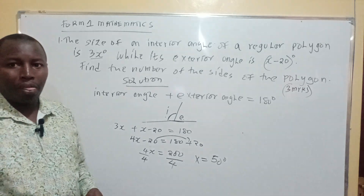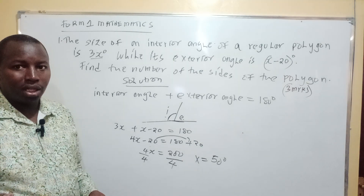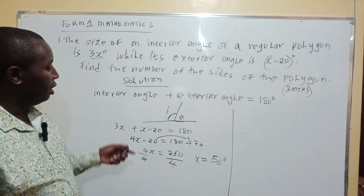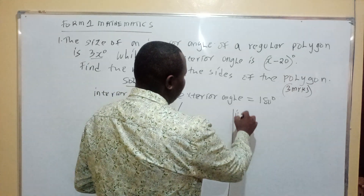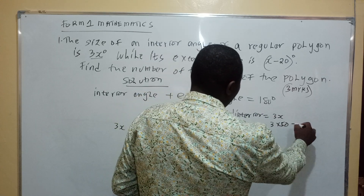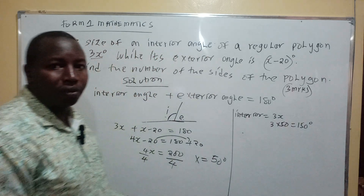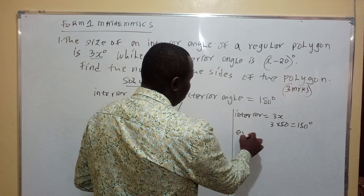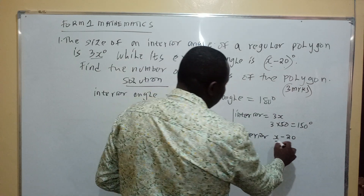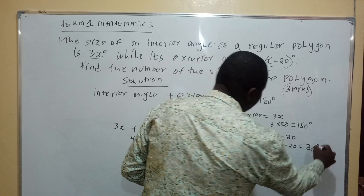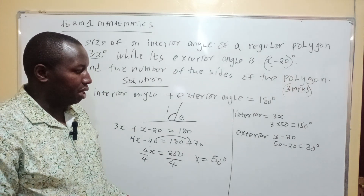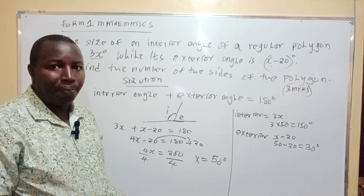The value of x is equal to 50 degrees. But the examiner is asking for the number of sides, so you now substitute to find the interior and exterior angles. The interior angle is 3x, so it is 3 times 50, which gives 150 degrees. The exterior angle was x minus 20, so that is 50 minus 20, which gives 30 degrees.